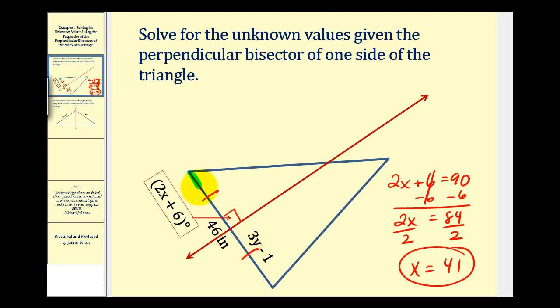The total length of this segment is 46 inches. That means this segment here must be half that length or 23 inches. And that's all we need to determine the value of y. We know that 3y minus 1 must equal 23.